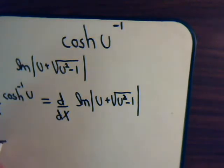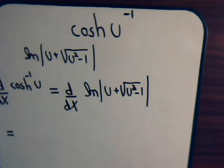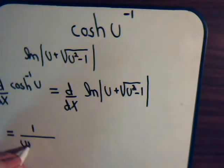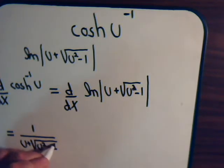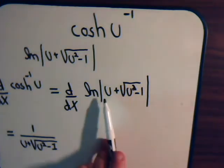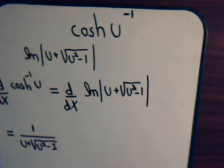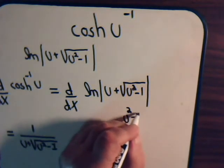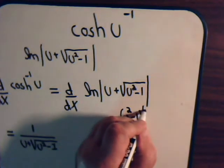This will equal — remember for logarithmic functions, when we take their derivatives the procedure gives us 1 over what is inside. So we have 1 over u plus the square root of u squared minus 1, times the derivative of this function with respect to x. The square root of u squared minus 1 is u squared minus 1 to the one-half power.